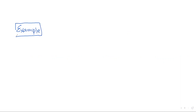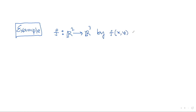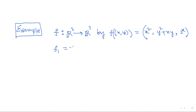As an example, consider the function f: R2→R3 defined by f(x, y) = (x², y² + xy, 2^x). The component functions are: f1(x,y) = x², f2(x,y) = y² + xy, and f3(x,y) = 2^x.